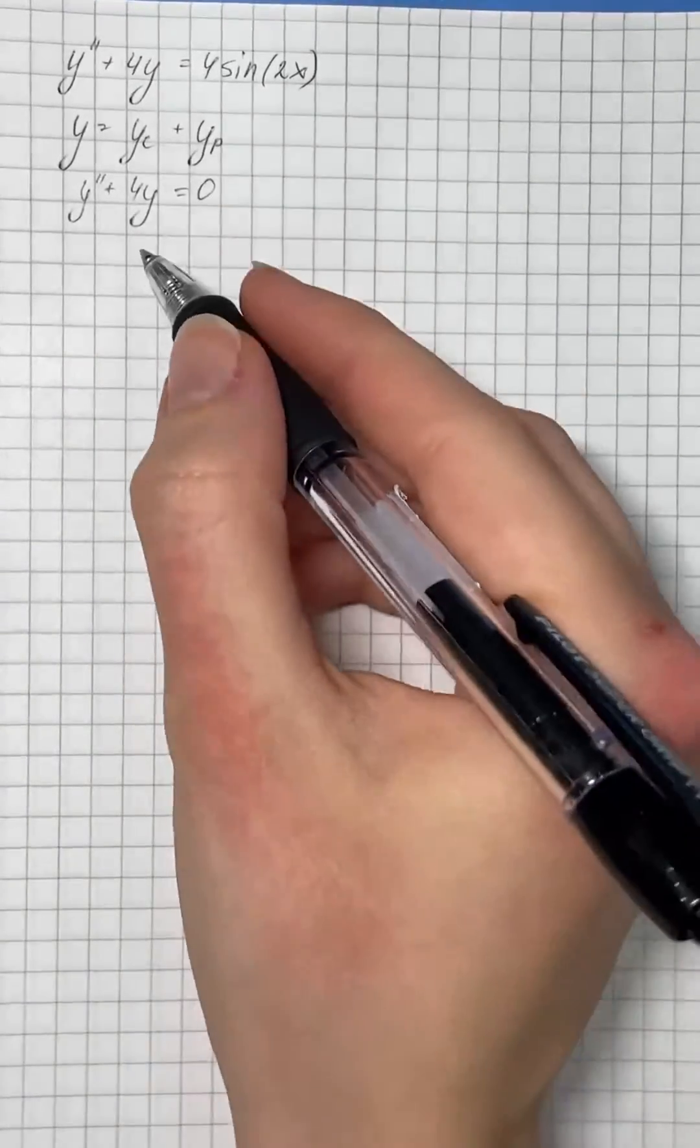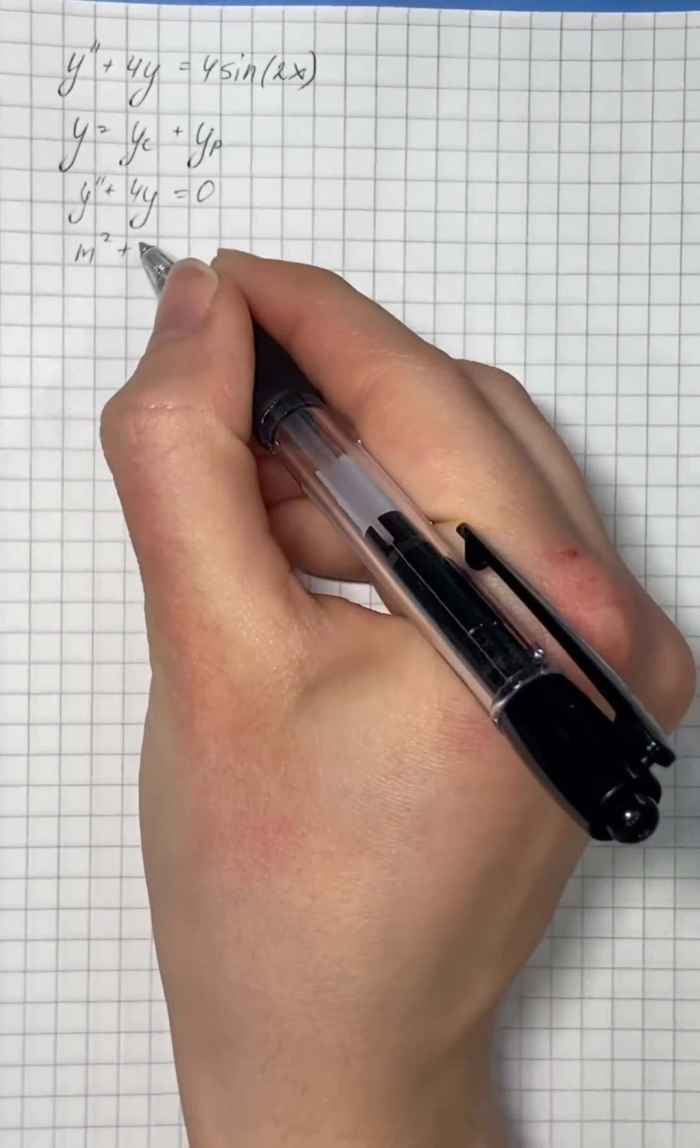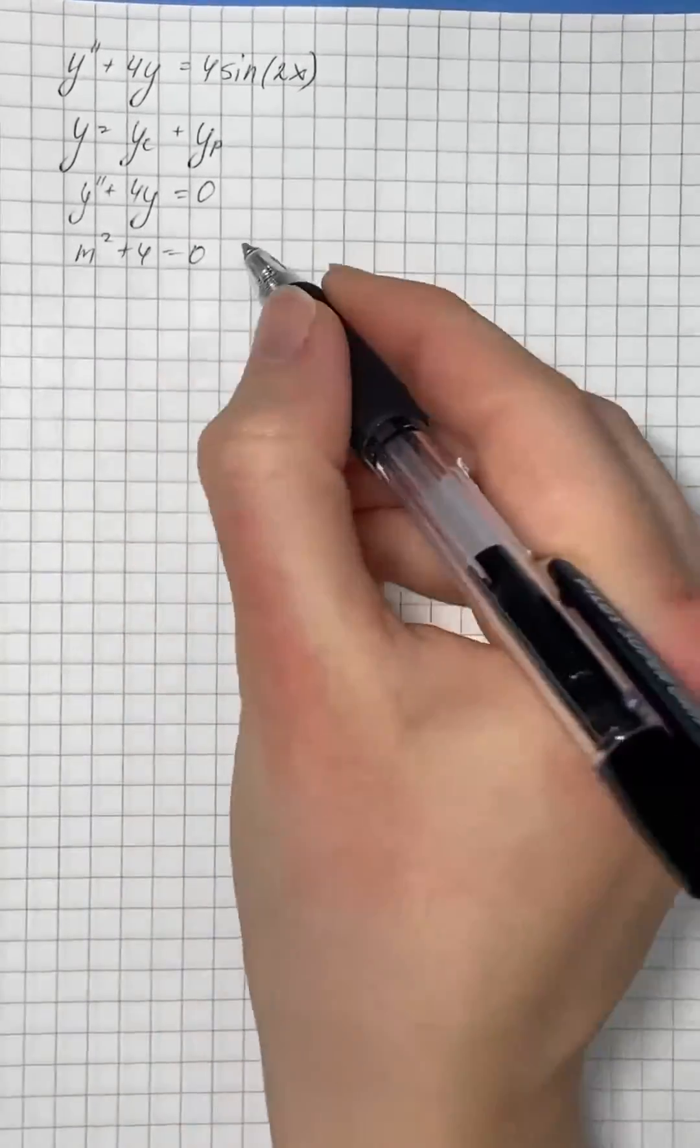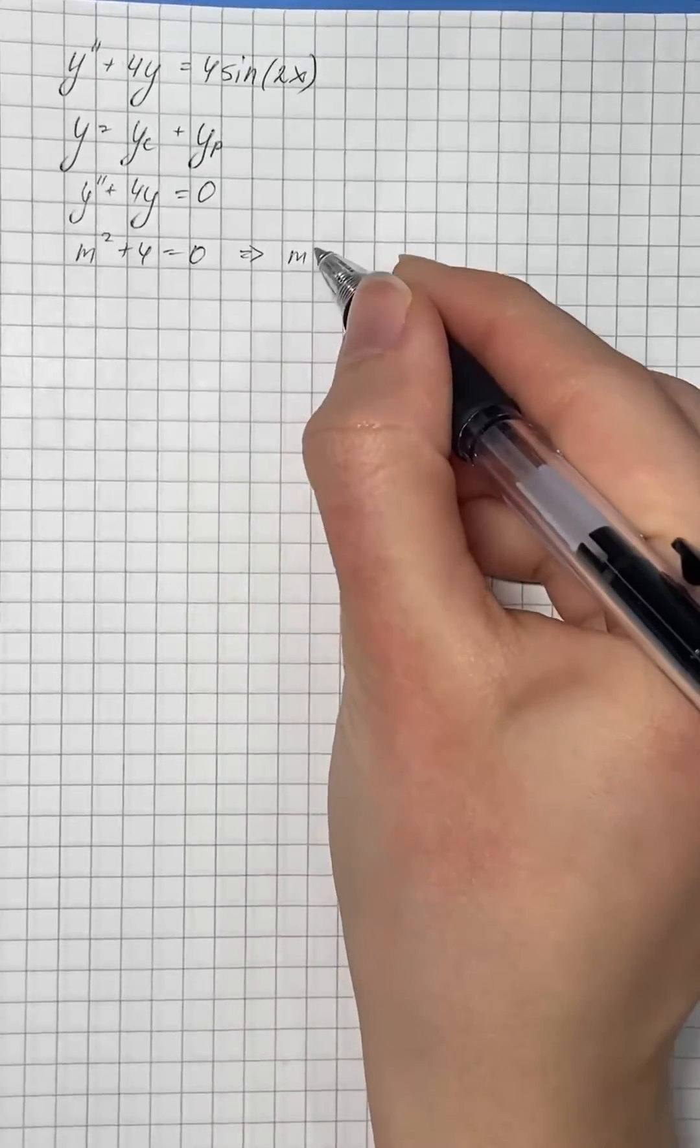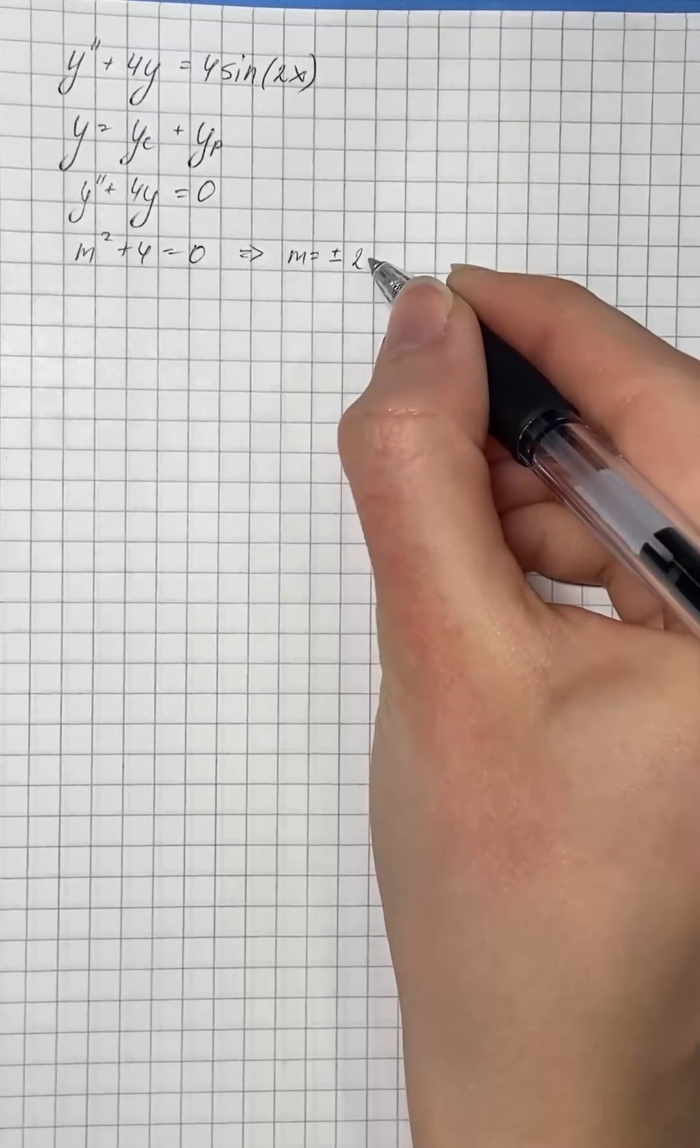We start with the characteristic equation m squared plus 4 equals zero, and we get that m equals plus or minus 2i.